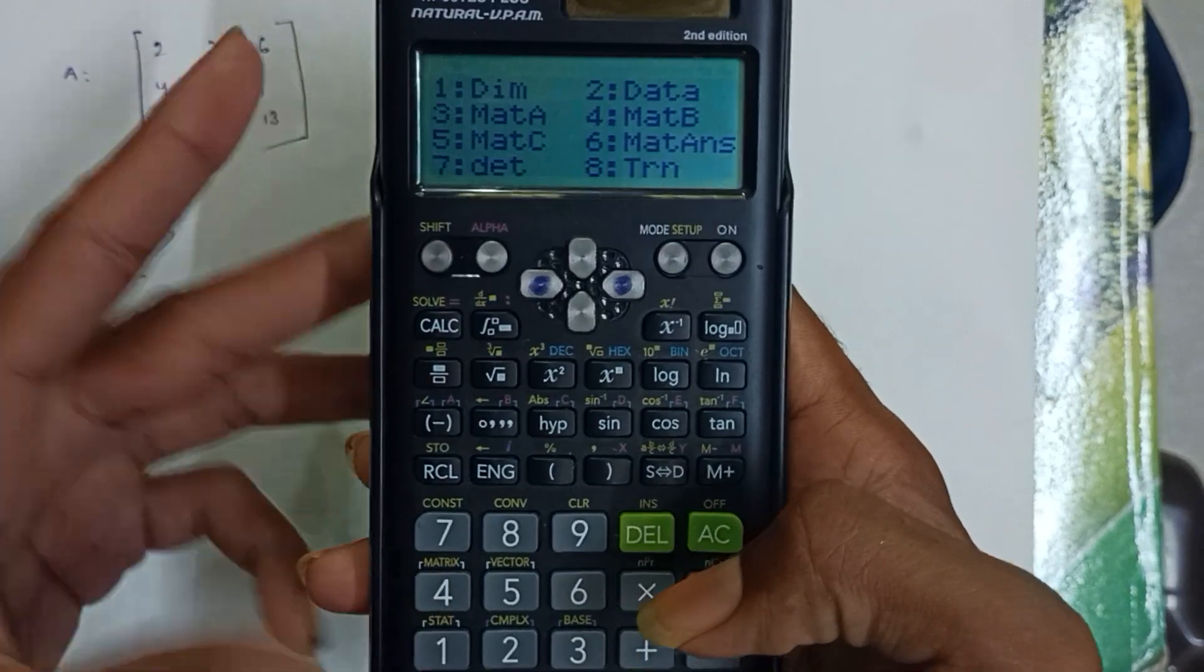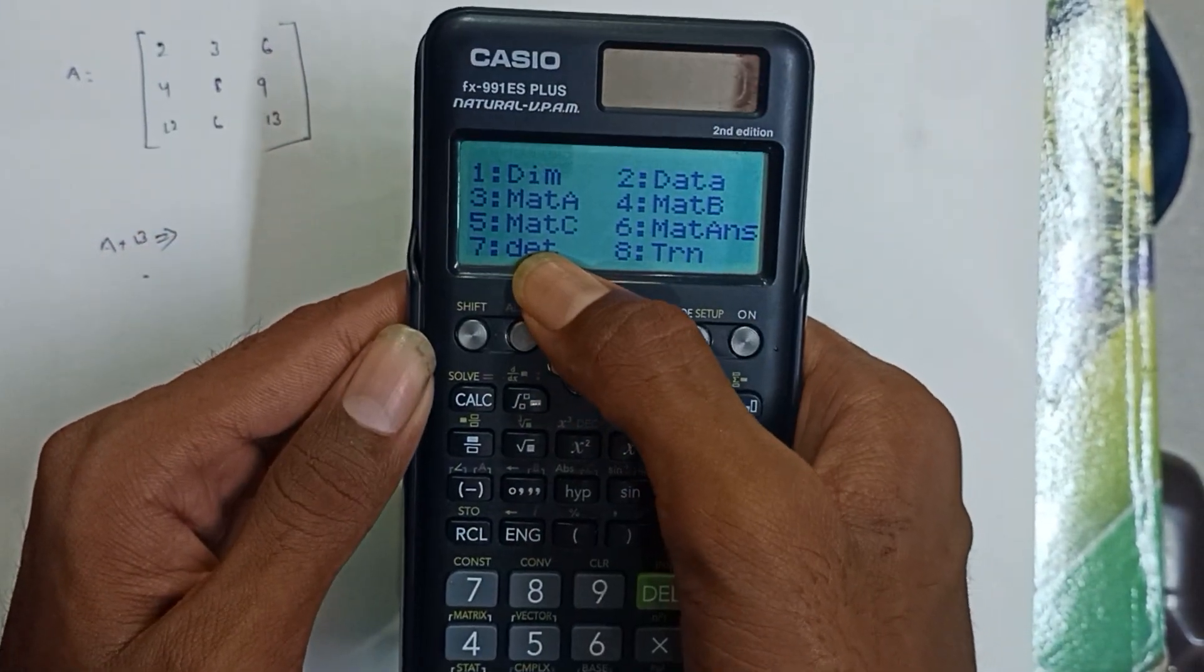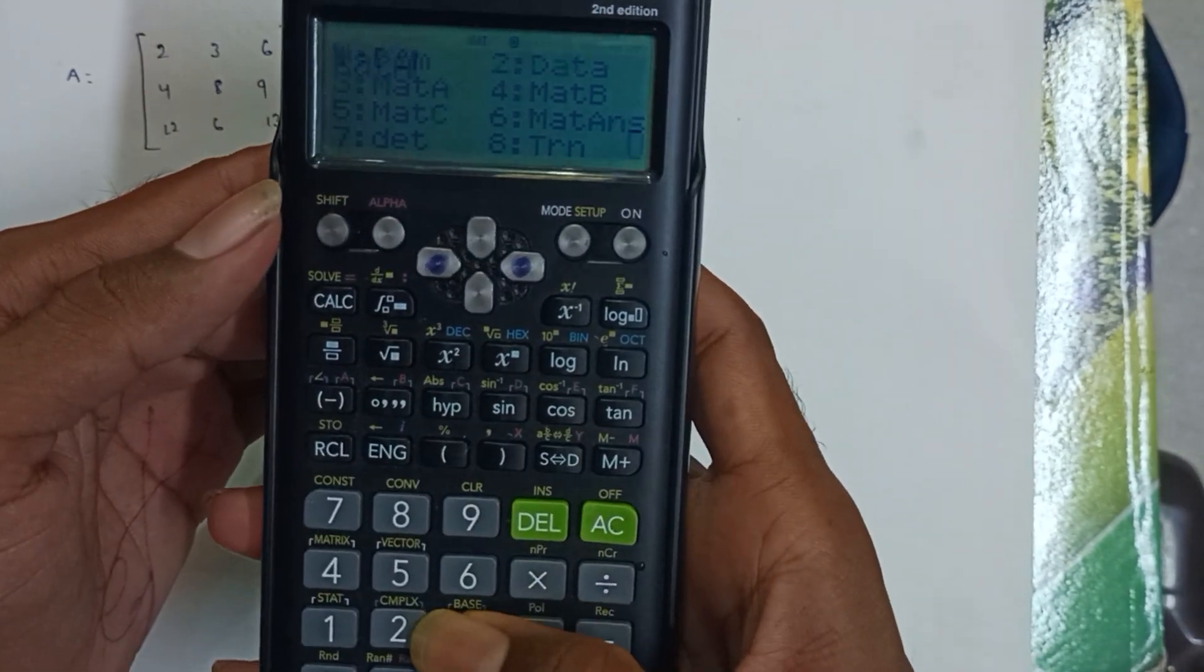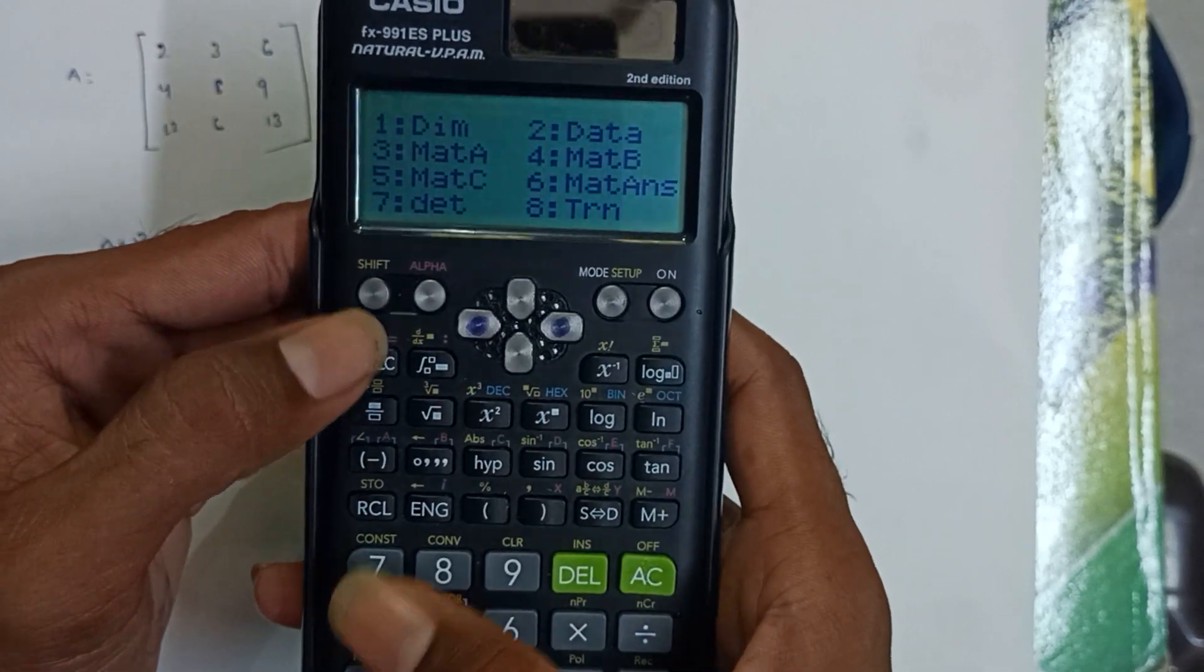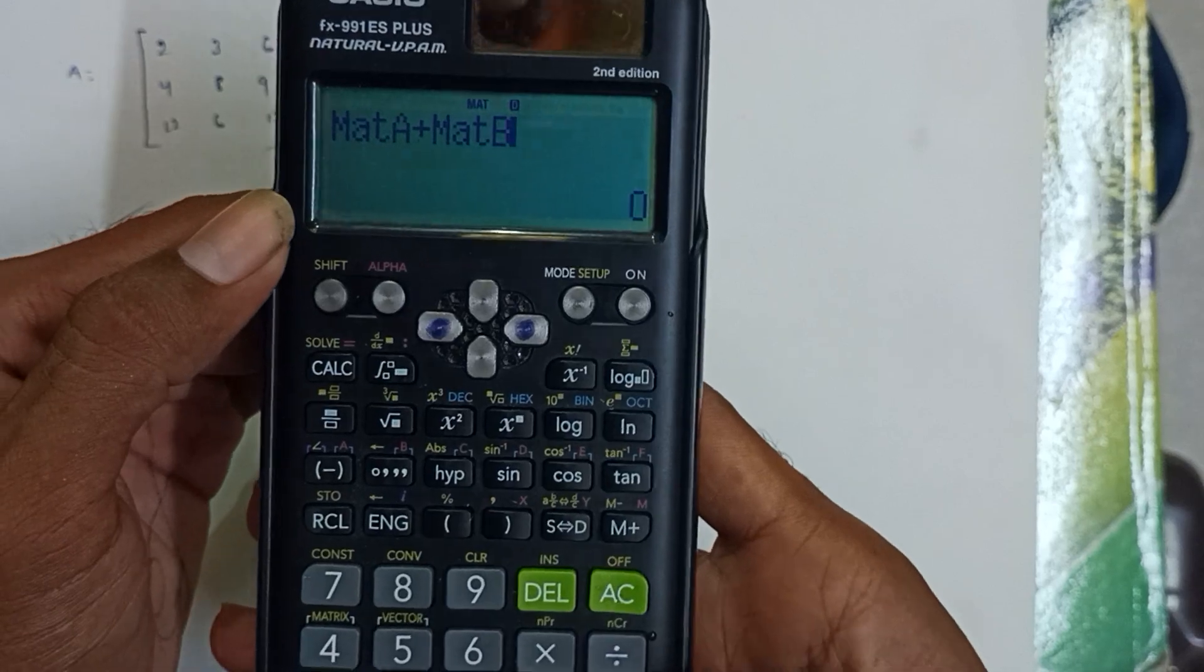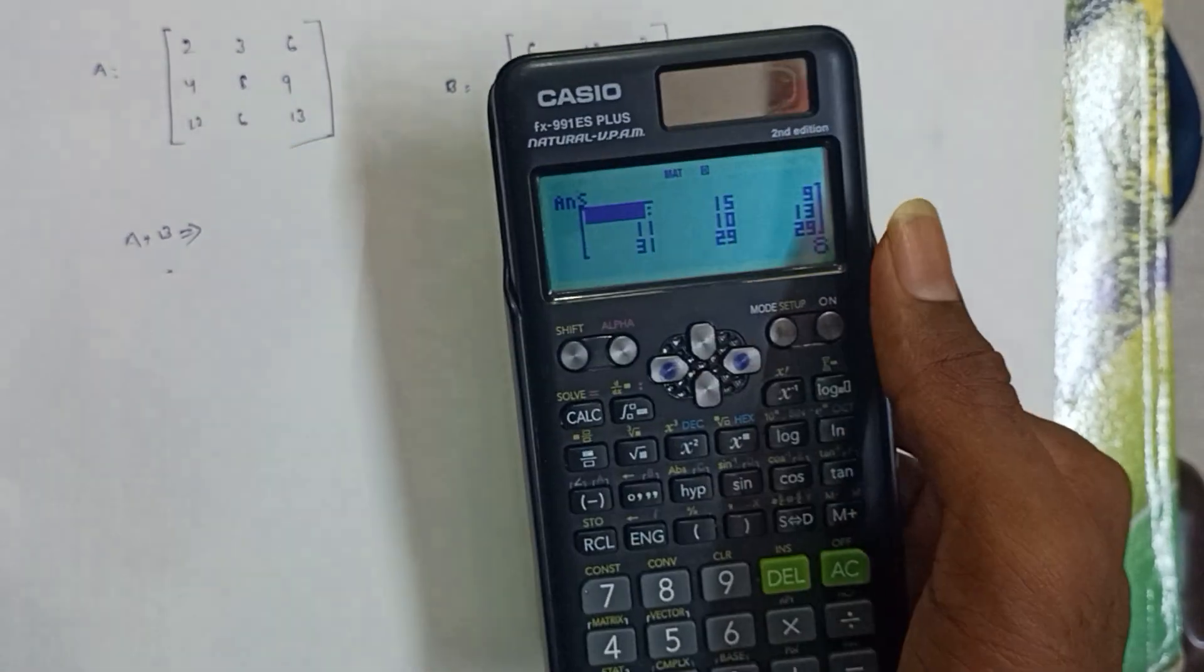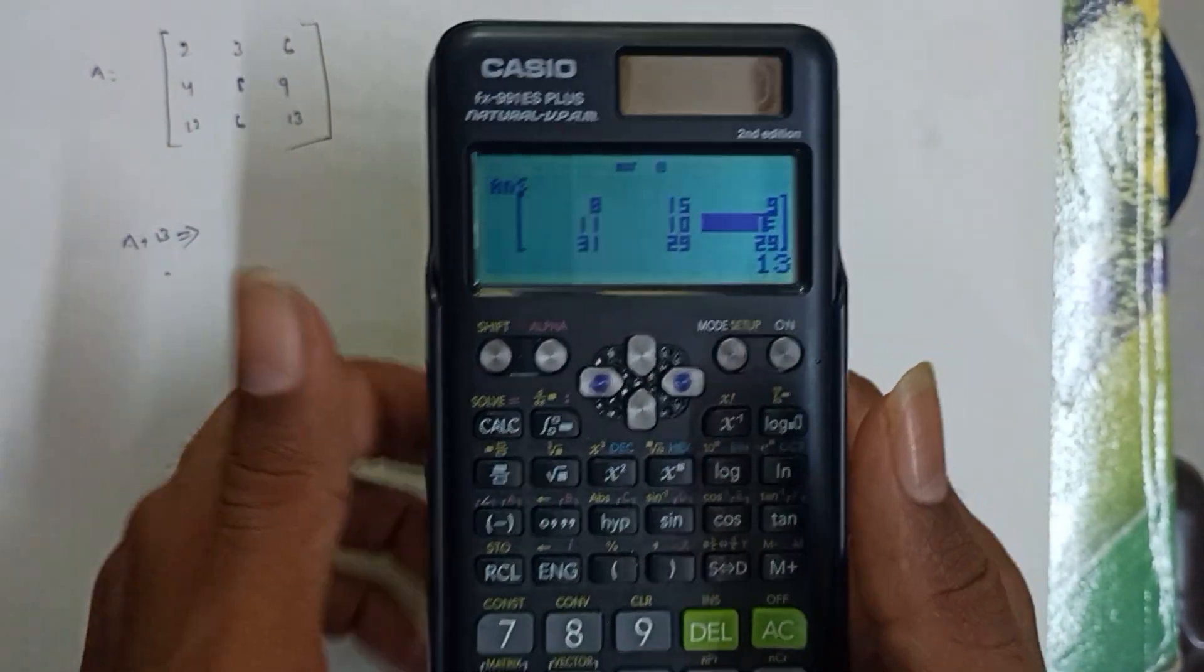Now press equal to. The first element is 15. This displays the complete matrix addition result.